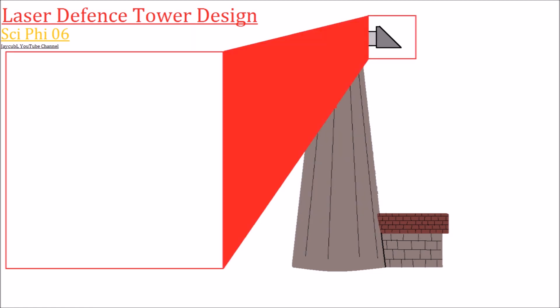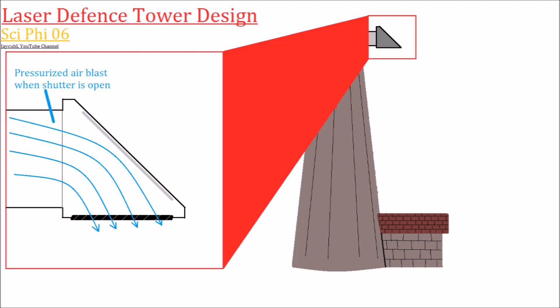This detail view of the second mirror at the end shows that it has a fast mechanical shutter to protect it from dust, so it's only open when it's firing. When it is open, a high pressure air blast across the mirror and out the shutter will help keep out any dust or rain or anything.